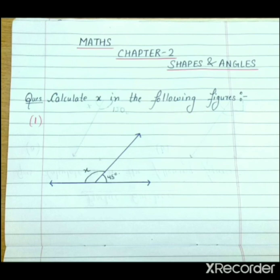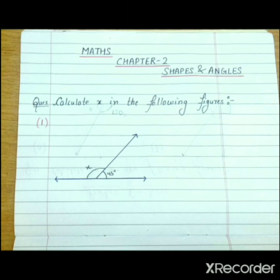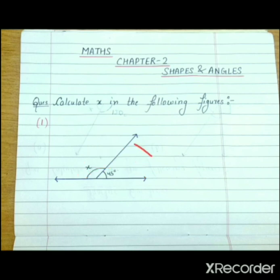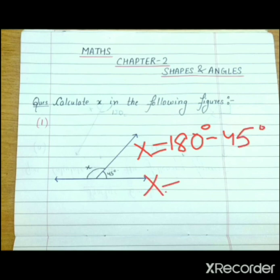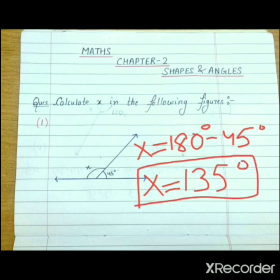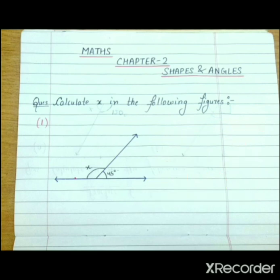So to find the value of x, what we will do? We will subtract this angle from the whole angle. If we subtract 45 degree from 180 degree then we will get the value of x. So x is equals to 180 degree minus 45 degree. If we subtract 45 degree from 180 degree, we will get 135 degree. So the value of x is equals to 135 degree.